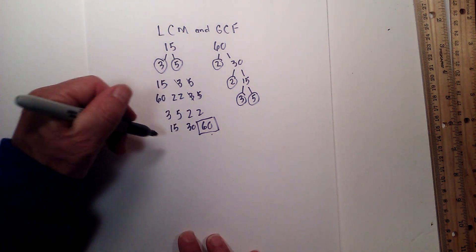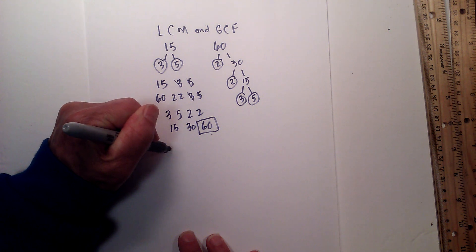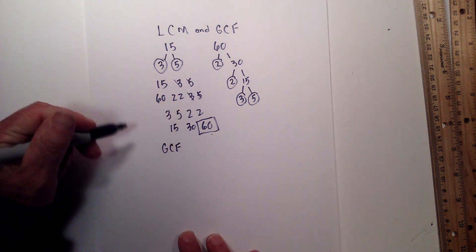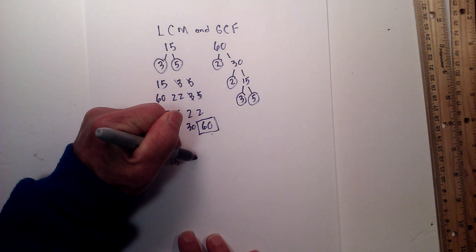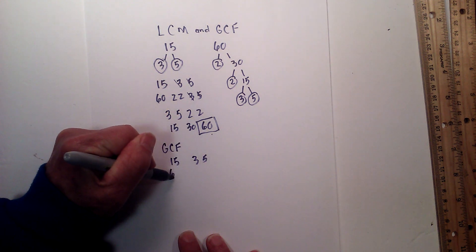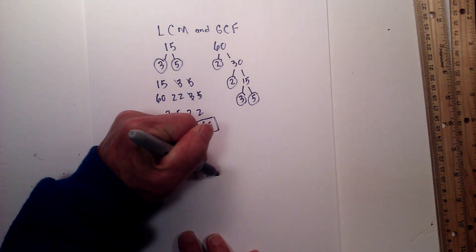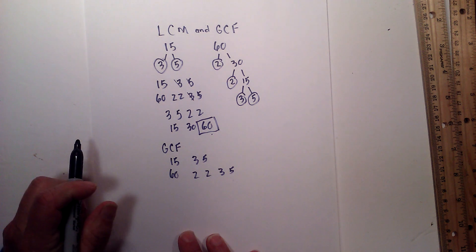Now for the GCF, I'll repeat the same thing. I'll write the prime numbers. We got 2, 2, 3, 5. And then what you do is you multiply numbers that are found in both of these numbers.